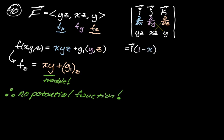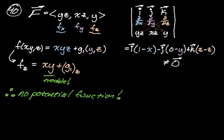Then minus j: ∂x(y) − ∂z(yz) gives that term. Then plus k: ∂x(xz) − ∂y(yz) gives z − z = 0. After finding the i component already equals 1 − x (not zero), we already knew this vector was not going to be zero, so there's no potential function. The full curl is not equal to the zero vector, and if you don't get the zero vector, there is no potential function.